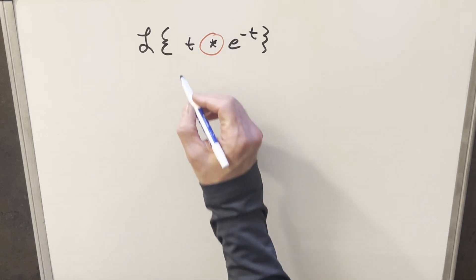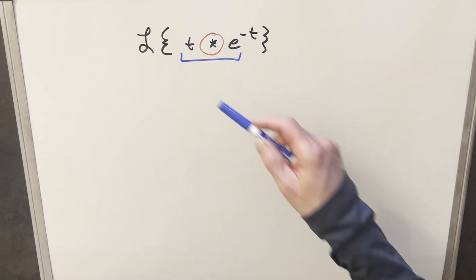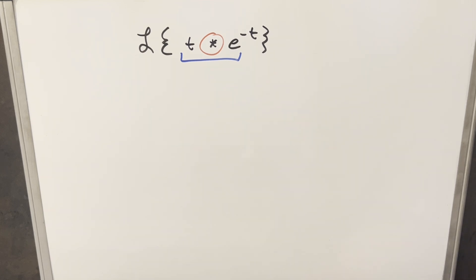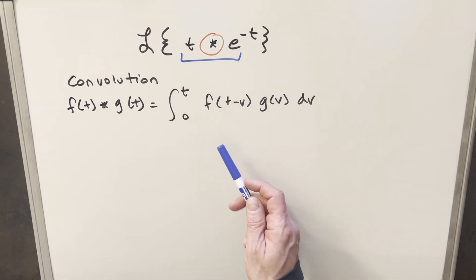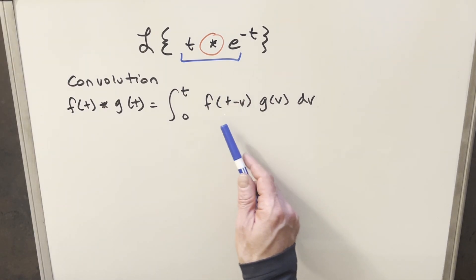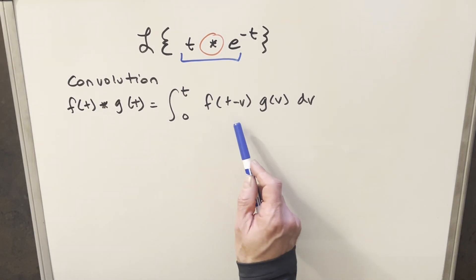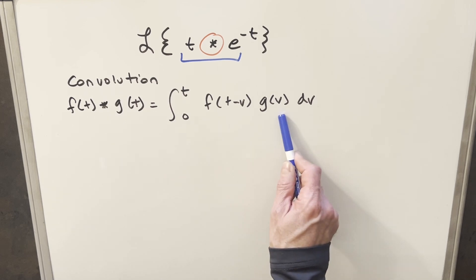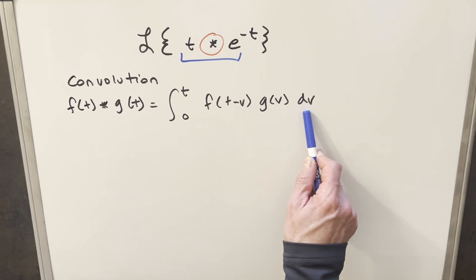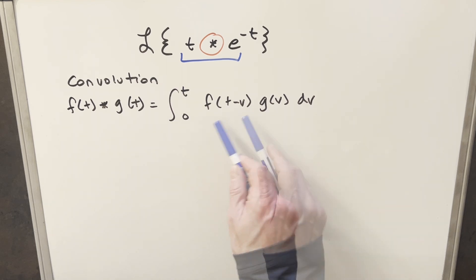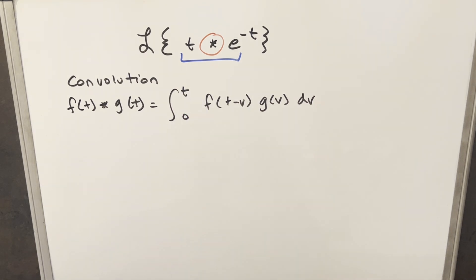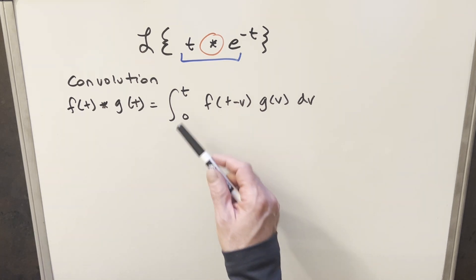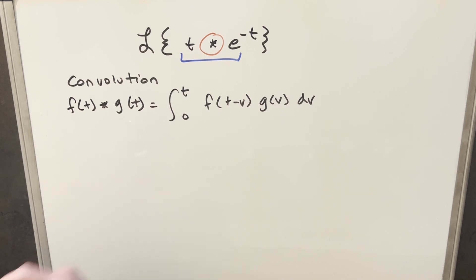To get started, what we really need to figure out is what does this mean — what is this convolution of two functions? Let's just look at the definition for the convolution. We have our definition right here, and it is kind of similar to multiplication because we're just multiplying these two functions within an integral, but one of them is shifted. So we integrate under another variable — in this case we'll call it v — and we integrate with one of our bounds as t, so we still get back a function in t.